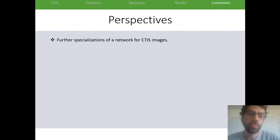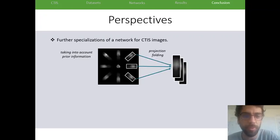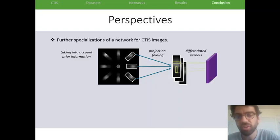As a perspective, we would like to further specialize the CTIS-NET network. We could, for example, take prior information into account by either some attention mechanism or simply highlighting specific wavelength zones of the CTIS images, which we could know to be important for a specific task by prior information, for example, from the literature. We could go further in the pre-processing of the first order by folding the different projections. What I mean is concatenating them into different channels instead of just leaving them into the same image. And we also thought of using differentiated kernels. So instead of only horizontal ones, also possibly use vertical ones to allow the network to process spectral information on one hand and spatial on the other one, and to help the network process the different types of information more easily.